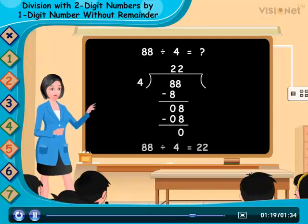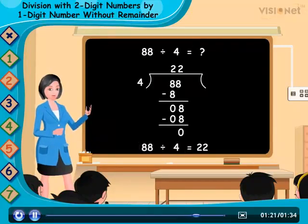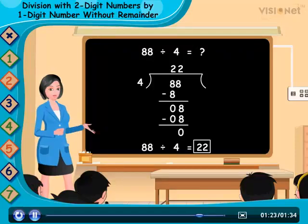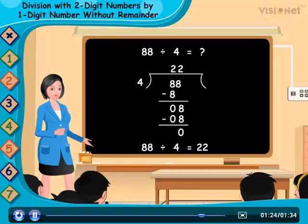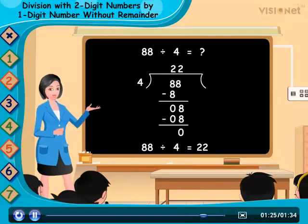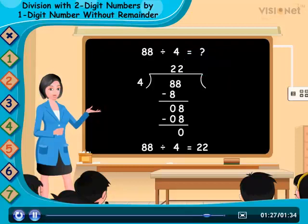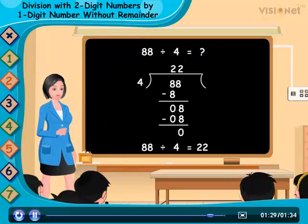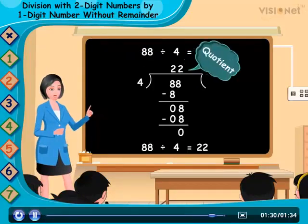Thus, 88 divided by 4 is equal to 22. Here 88 is the divisor. 4 is the dividend. 22 is the quotient. And 0 is the remainder.